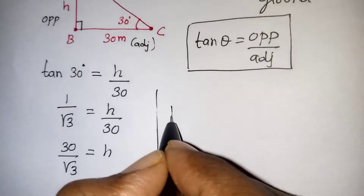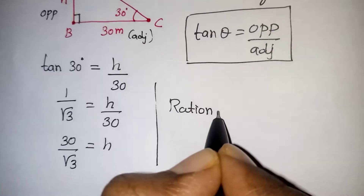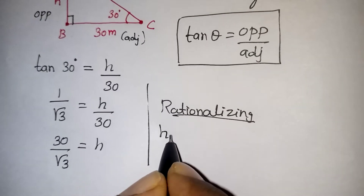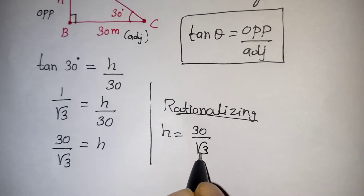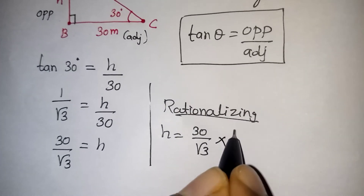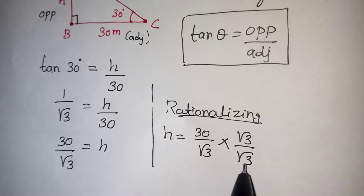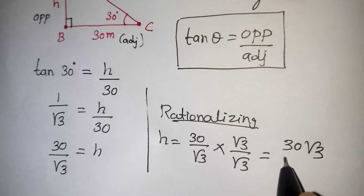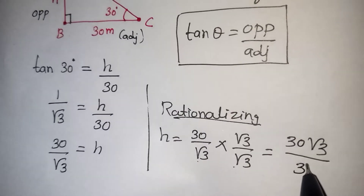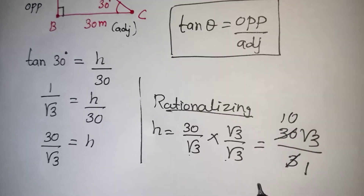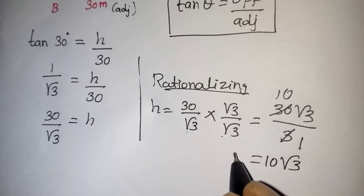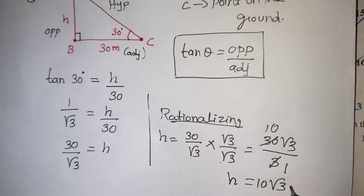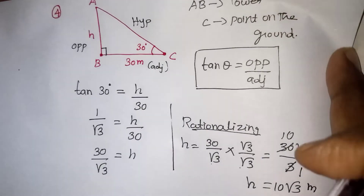We need to do rationalization because the denominator should not have a root number. So we multiply and divide by root 3. The numerator becomes 30 root 3, and the denominator becomes root 3 times root 3, which is 3. So we get 30 root 3 divided by 3, which simplifies to 10 root 3. Therefore H equals 10 root 3. Since the question is given in meters, the height of the tower is 10 root 3 meters.